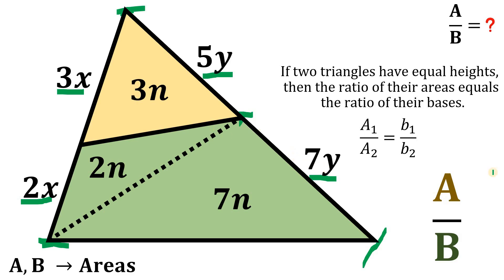At this point, we can say that A simply equal to 3 times n and this B simply equal to 2n plus 7n or simply equal to 9n.